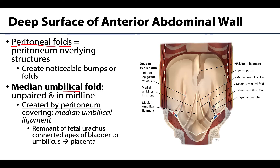The peritoneum is covering what we refer to as ligaments. The term ligament here is used in a more general sense — not connective tissue connecting bone to bone, but often a closed remnant of an embryonic structure connecting two structures. We will discuss several peritoneal ligaments in this region and throughout the rest of the abdomen, so this use of the term ligament will come up repeatedly.